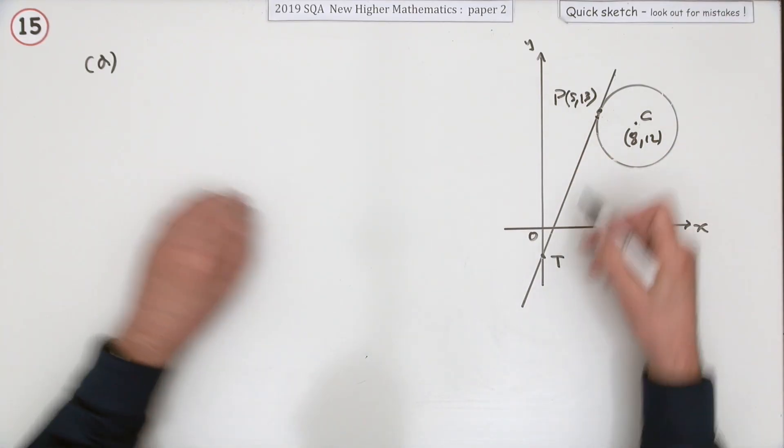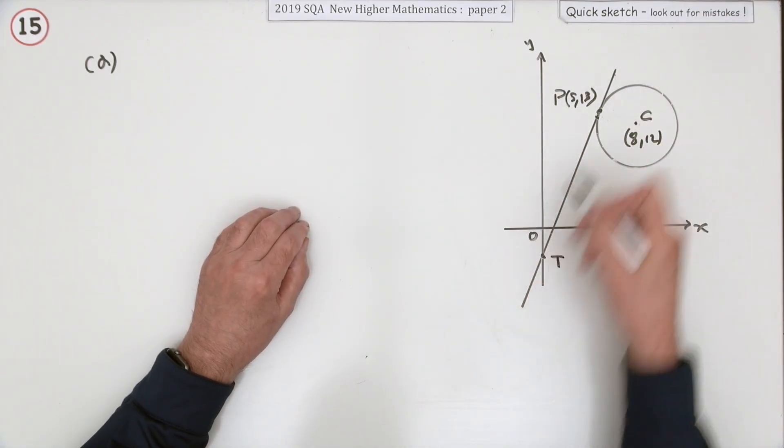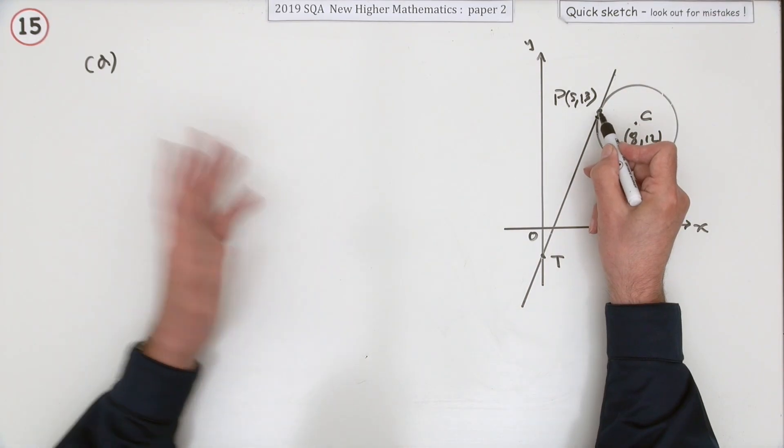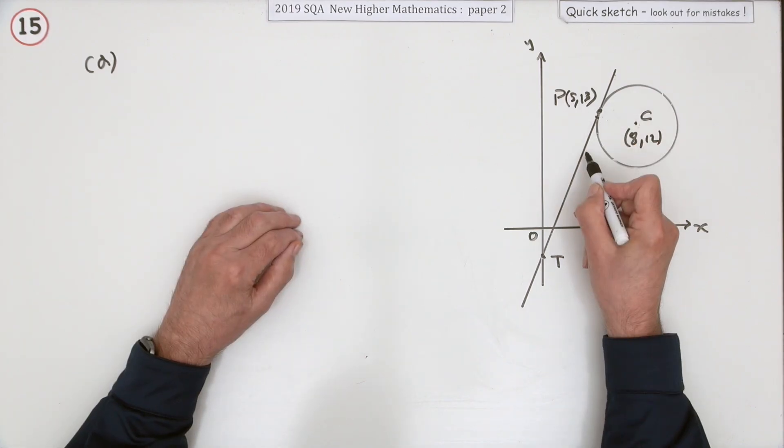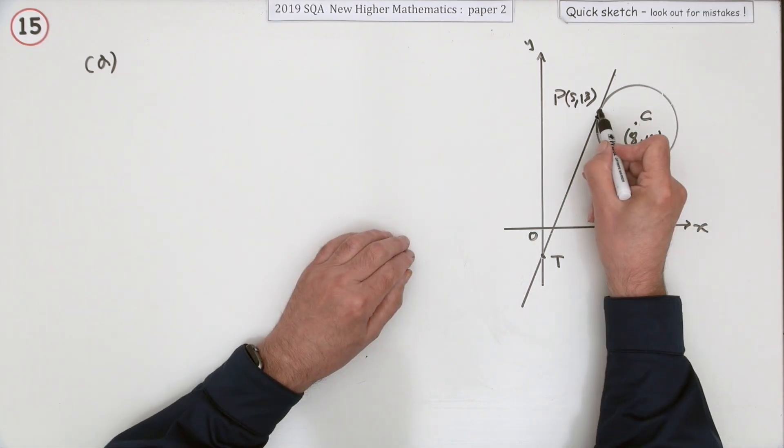The equation of a tangent, well it's just a line. To get the equation of a line you need a point on it, you've got it. You need its gradient. Well to get its gradient, you can use the fact that it's perpendicular to this radius.